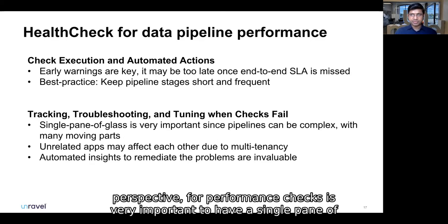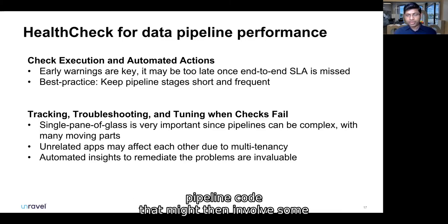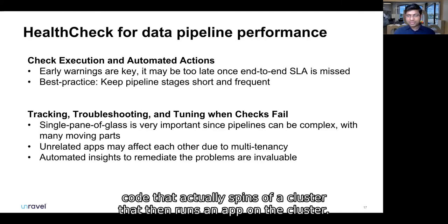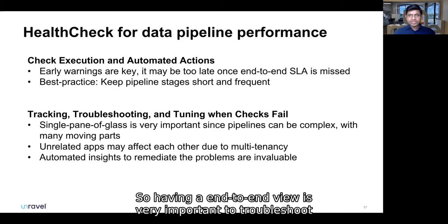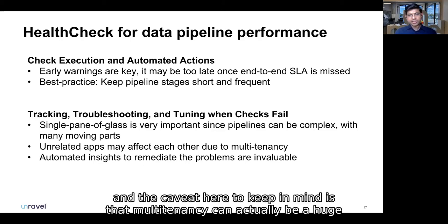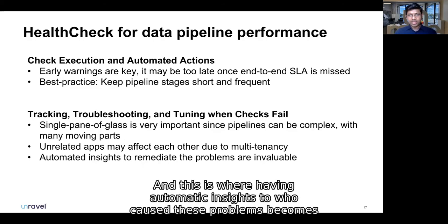From a troubleshooting and tuning perspective, performance checks make it very important to have a single pane of glass. For example, an Airflow pipeline might invoke some code that spins up a cluster that then runs an app on that cluster. So having an end-to-end view is very important to troubleshoot problems — for example, if the app that eventually ran was slow. A caveat here is that multi-tenancy can actually be a huge problem, where an app totally unrelated to the pipeline might affect its performance. This is where having automatic insights to root cause these problems becomes invaluable.